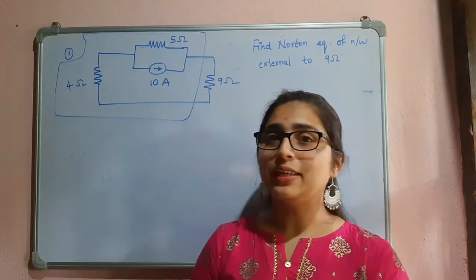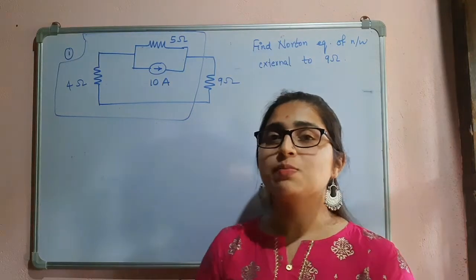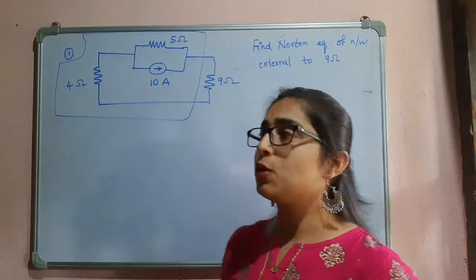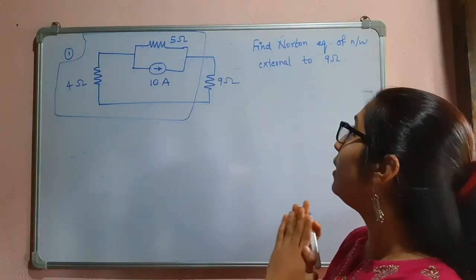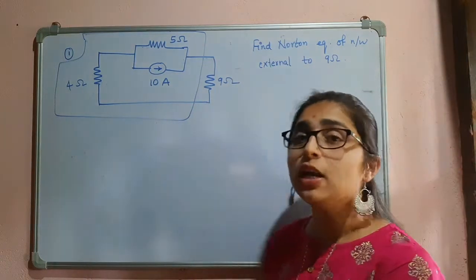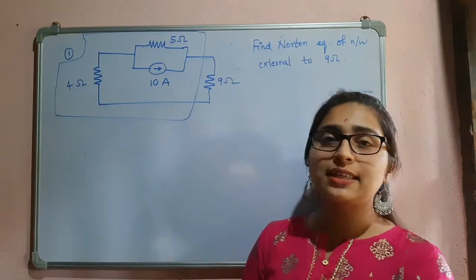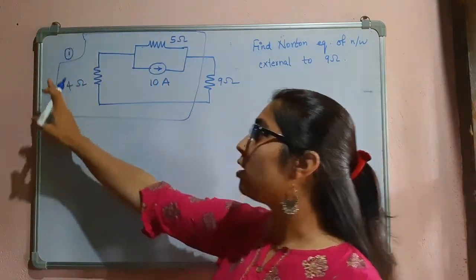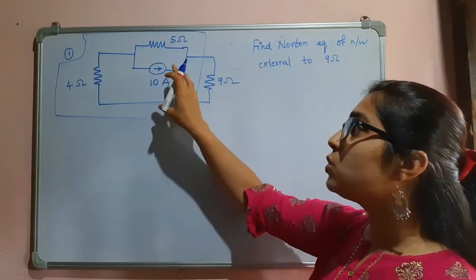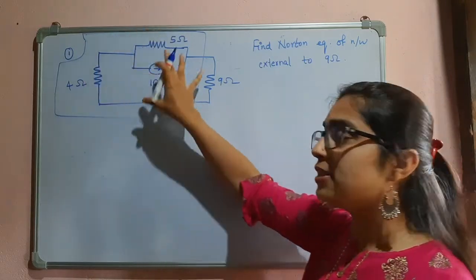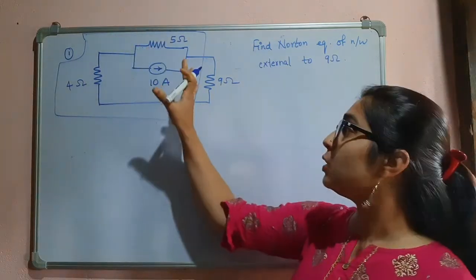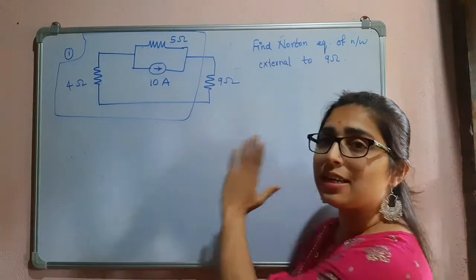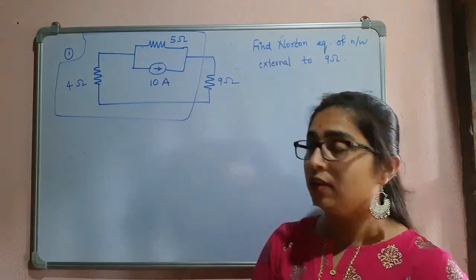Hello everyone. In this video let us try some questions on Norton's theorem. This is the question and here they are asking you to find the Norton equivalent of the network which is external to 9 ohm. That means I have already drawn a box, so I have to find the Norton equivalent circuit of this portion — external to 9 ohm, meaning I am not considering the 9 ohm resistor here.